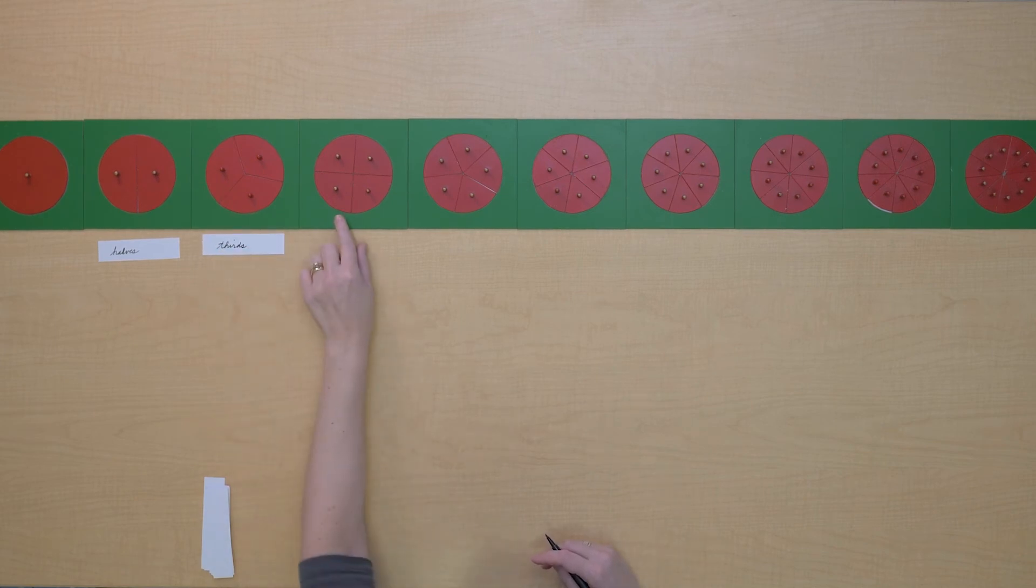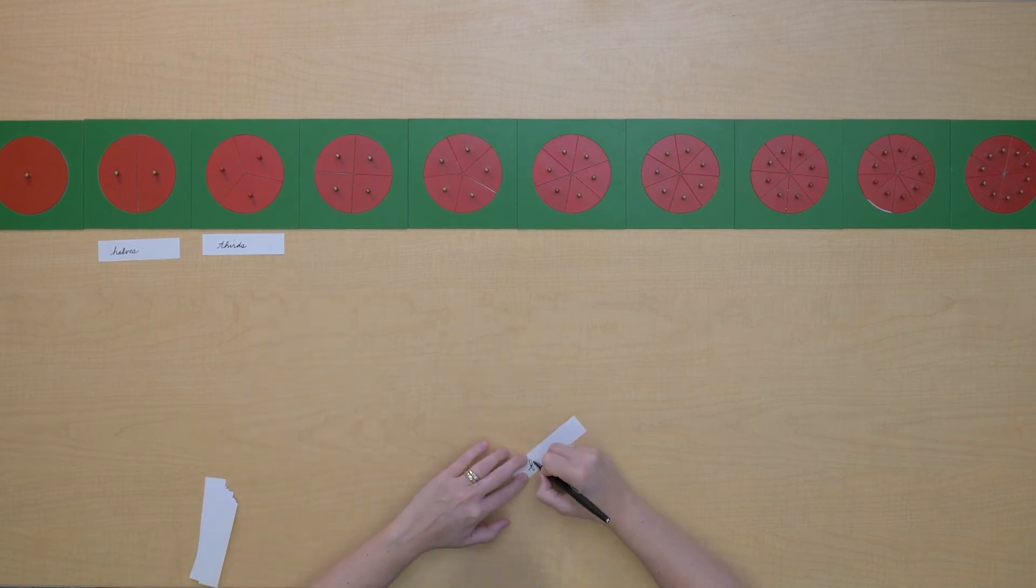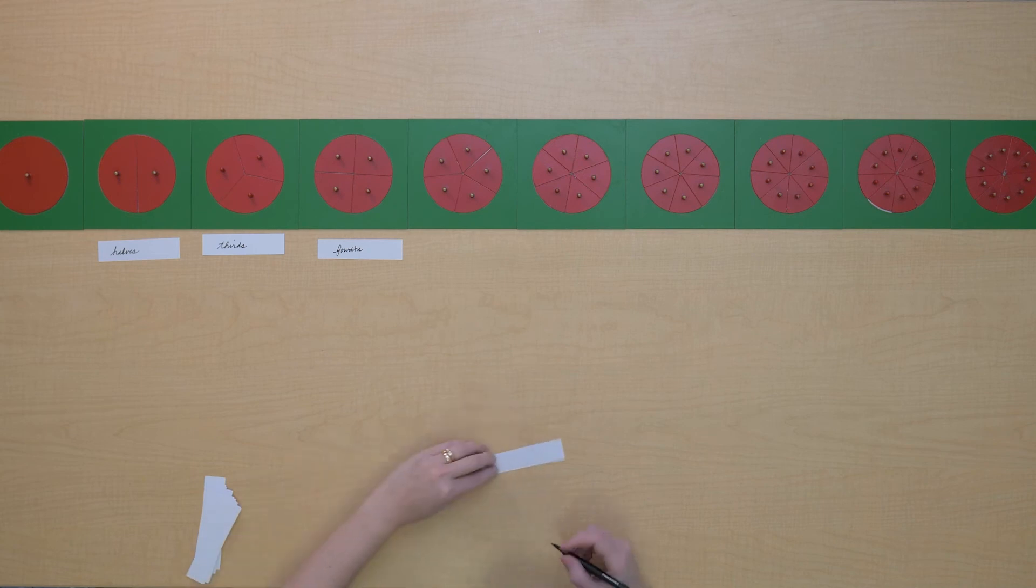Here we have a unit that has four pieces. This is fourths. Our unit here has five pieces so this is fifths.